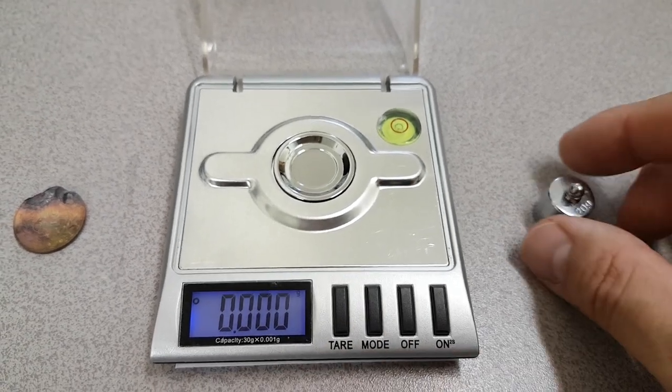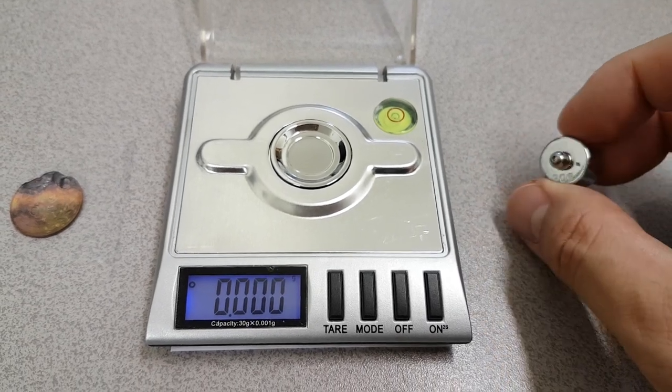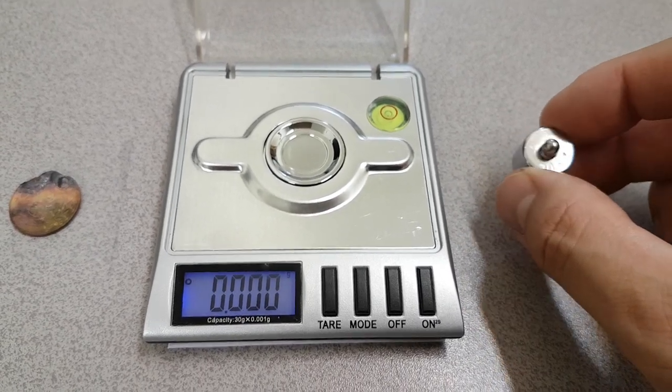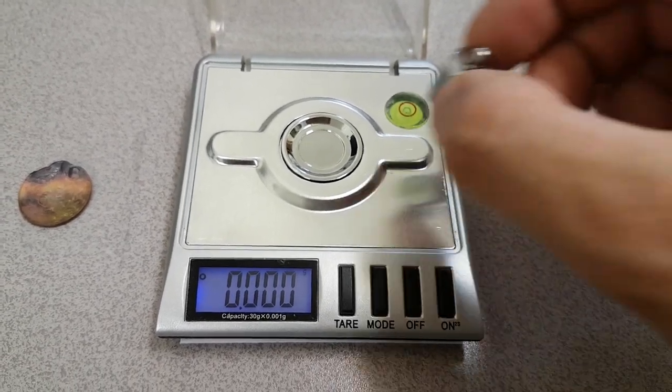Then we're going to use this 20 gram weight, which is about 4.5 times the weight of the coin. We're going to use that to establish the accuracy.